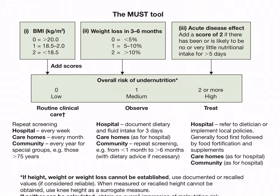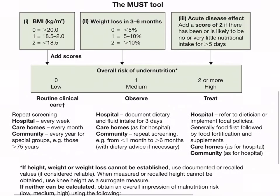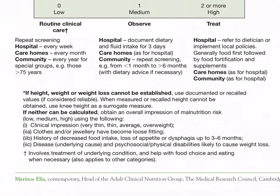An acute disease effect adds a score of 2 if there has been or is likely to be no or very little nutritional intake for more than five days. If height, weight, or weight loss cannot be established, use undocumented or recalled values. If height cannot be obtained, use knee height as a surrogate. If neither is available, use clinical impression: very thin, thin, average, or overweight. Additional indicators include clothes or jewelry becoming loose fitting, history of decreased food intake or dysphagia over three to six months, and underlying disease or physical disabilities likely to cause weight loss.